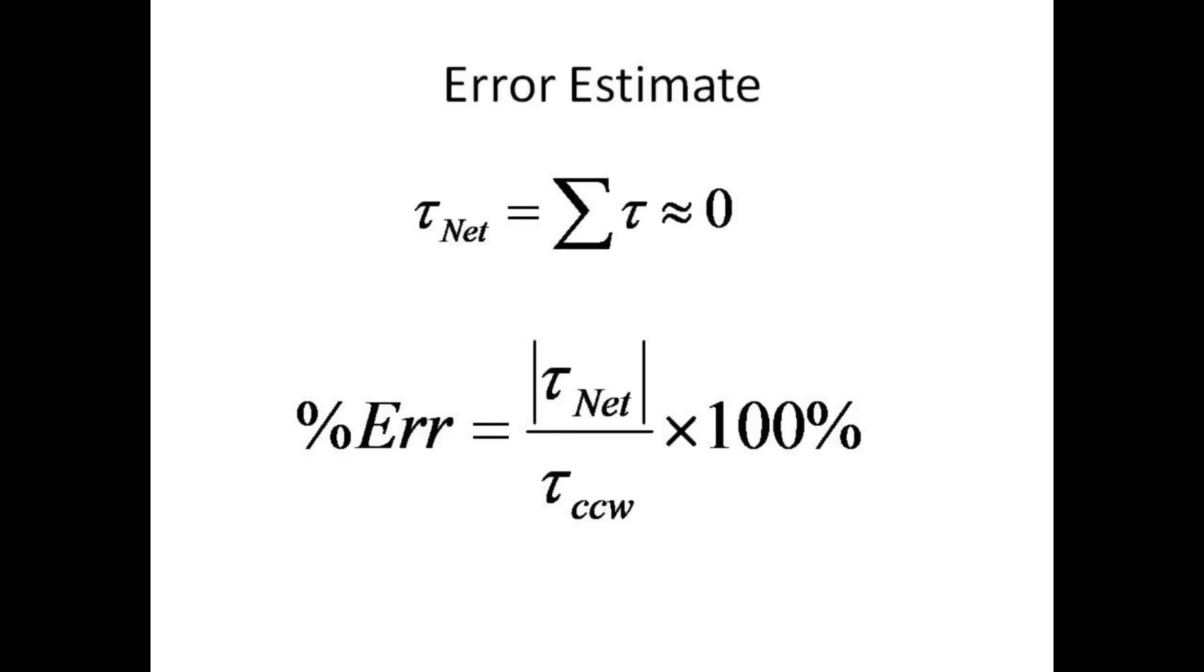Calculate the net torque, which should be nearly zero. Compare this small residual error in measured torque with the total counterclockwise torque due only to the biceps muscle to get a percent error.